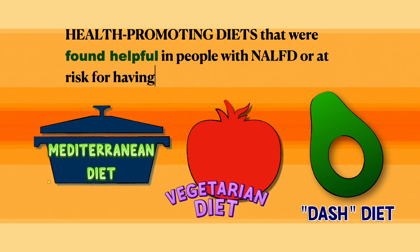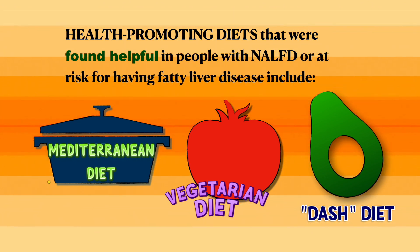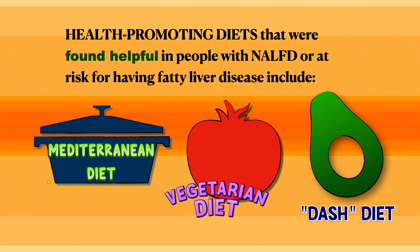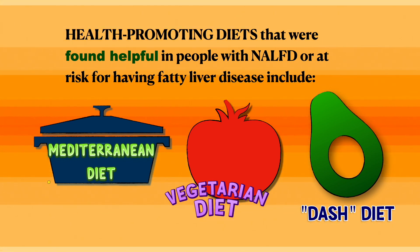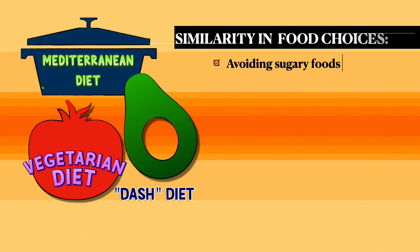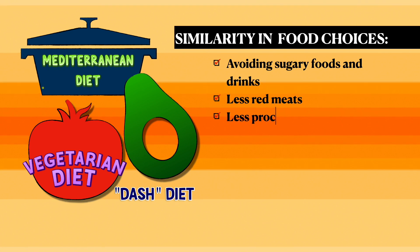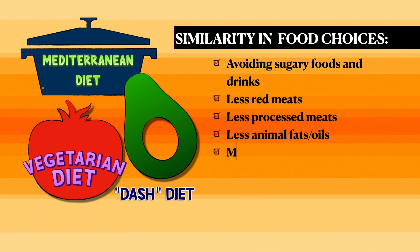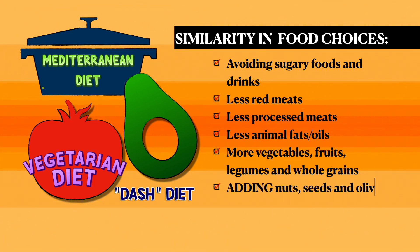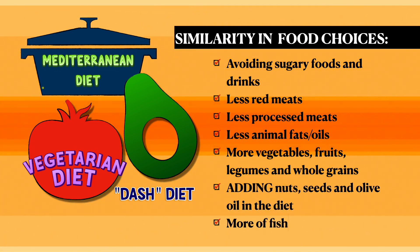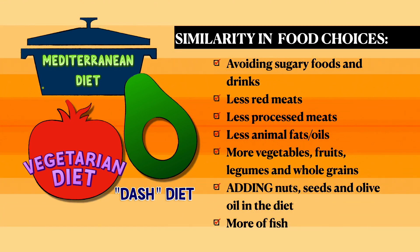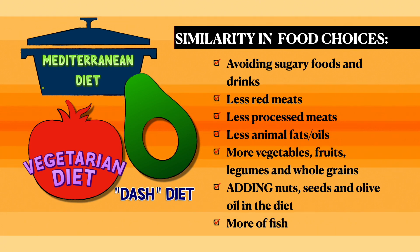NAFLD patients or those at high risk are advised to follow health-promoting diets such as the Mediterranean diet, vegetarian diet, and DASH diet. Among the similarities of these diets include: avoiding sugary foods and drinks, less red meats, less processed meats, less animal fats and oils, more vegetables, fruits, legumes, and whole grains, adding nuts, seeds, and olive oil in the diet, and the consumption of more fish.